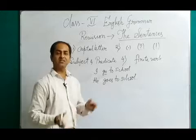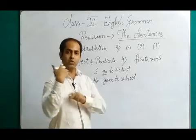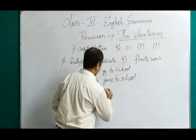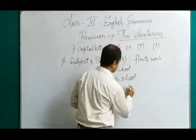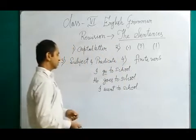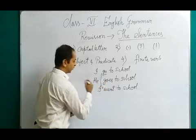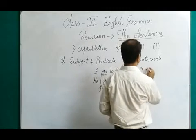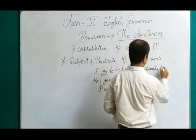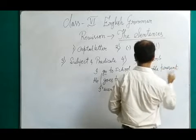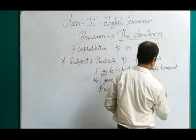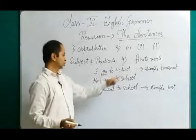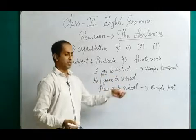'I go to school' is simple present tense. If I want to say it in the past tense, I will write 'I went to school.' We can see that 'go' changes to 'went' when talking about simple past tense. So when it is simple present: 'I go to school'; when it is simple past: 'I went to school.'